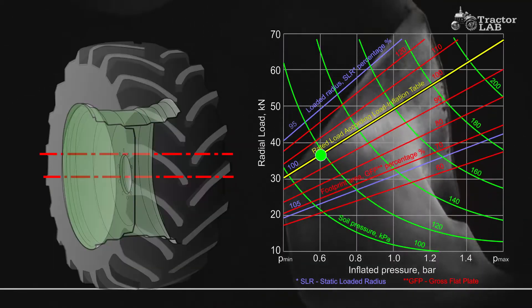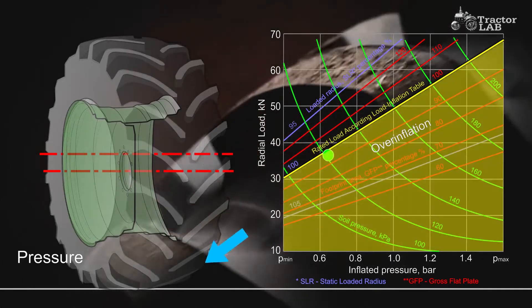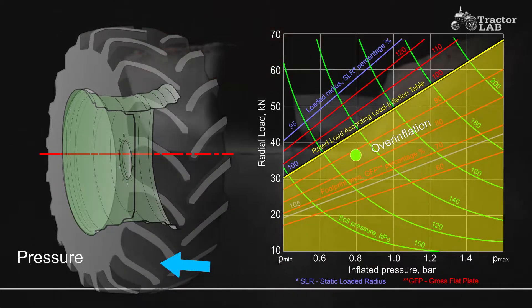Tire Overinflation. Overinflation results in an under-deflected tire carcass. The tread is more rounded and wear is concentrated at the center.